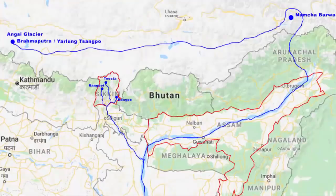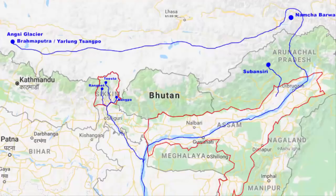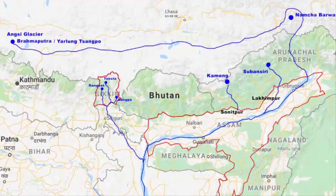Along the way, several Himalayan streams join the Brahmaputra. The first river is Subansiri. Although it originates in the Tibetan region of the Himalayas, it flows east and southeast into Arunachal Pradesh, then south to the Assam valley, where it finally joins the Brahmaputra in Lakhimpur district. The second river is Kamang. This river also originates from the Himalayas at the India-Tibet border, flows south into Arunachal Pradesh, then enters Assam through Sonitpur district, and finally joins the Brahmaputra at Tezpur.